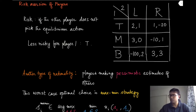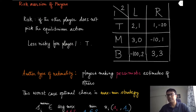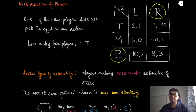So let us look at one example. In this game on the right hand side, player one has three strategies, player two has two strategies, and it is not very difficult to figure out which one is the Nash equilibrium — essentially B comma R is the Nash equilibrium for this game.